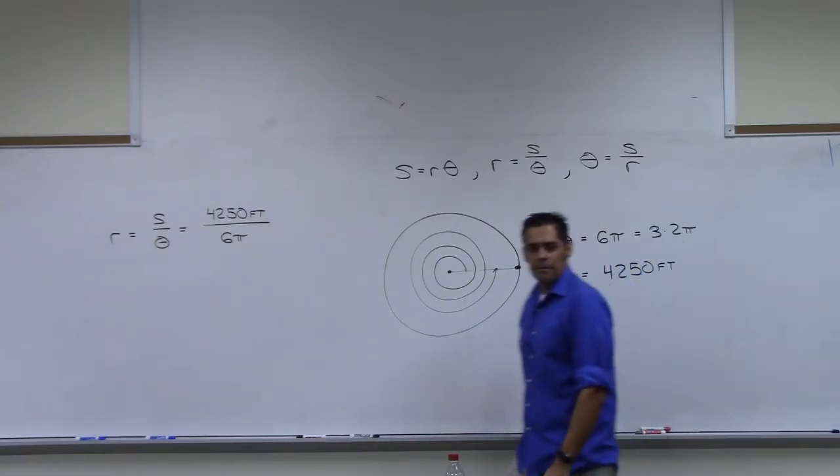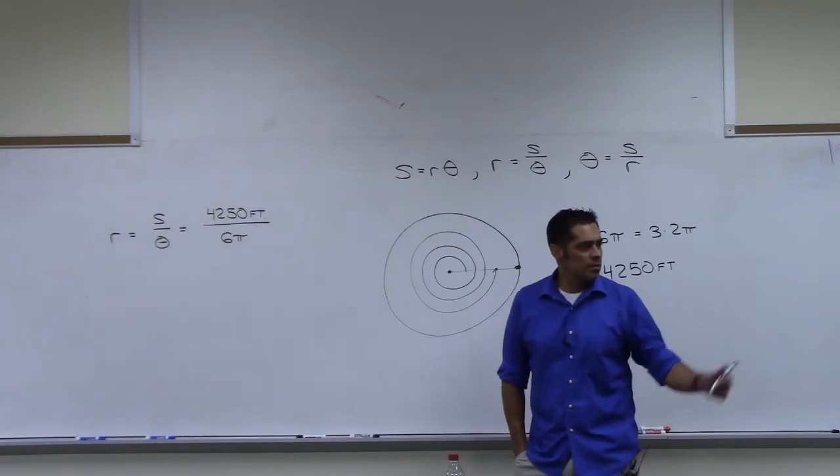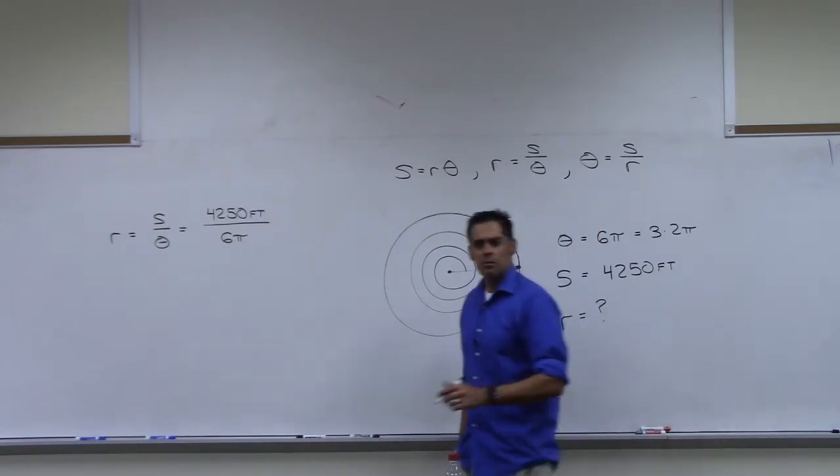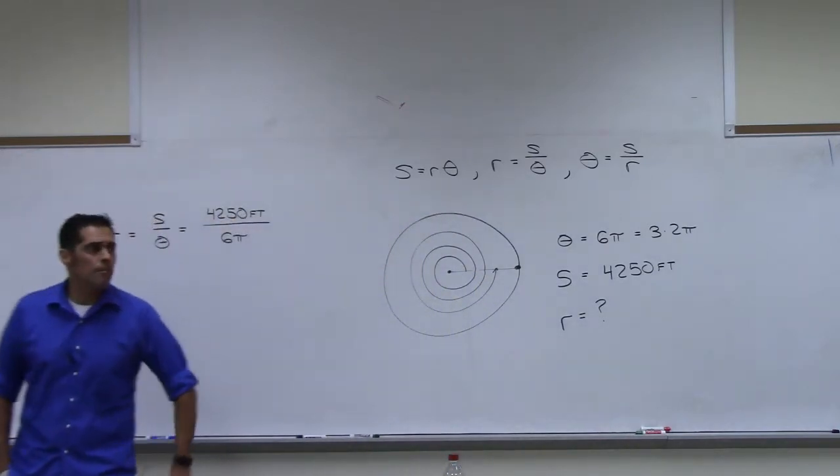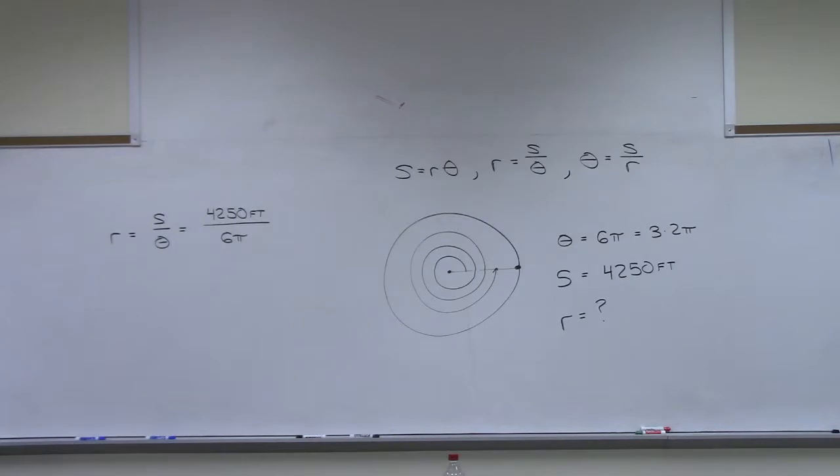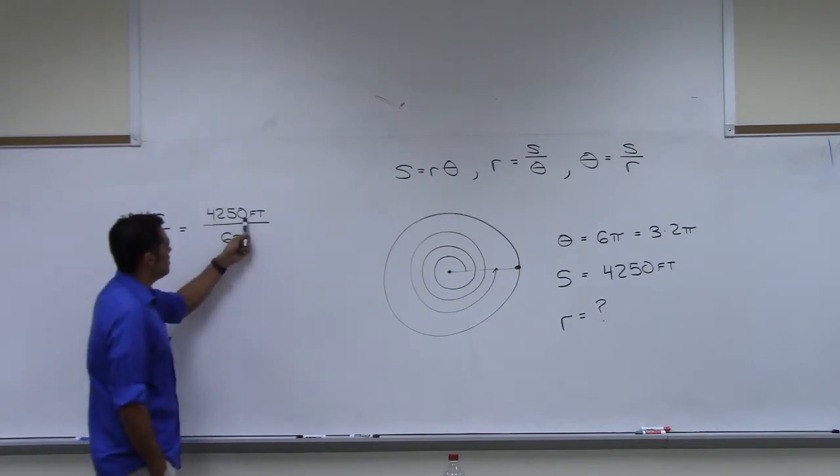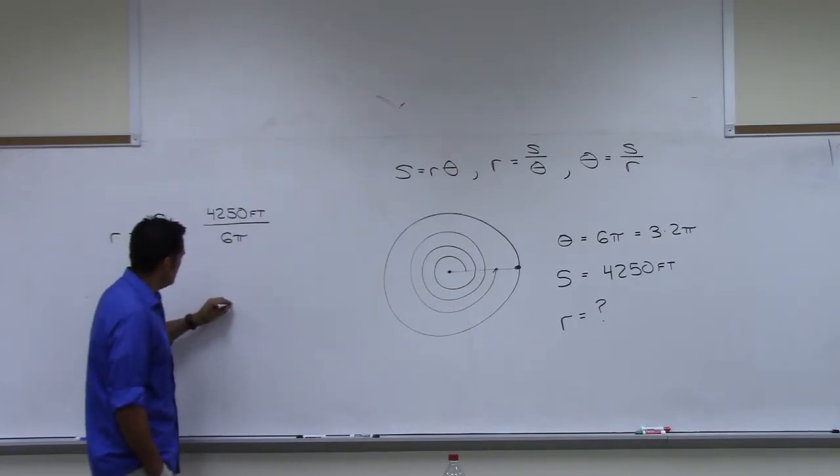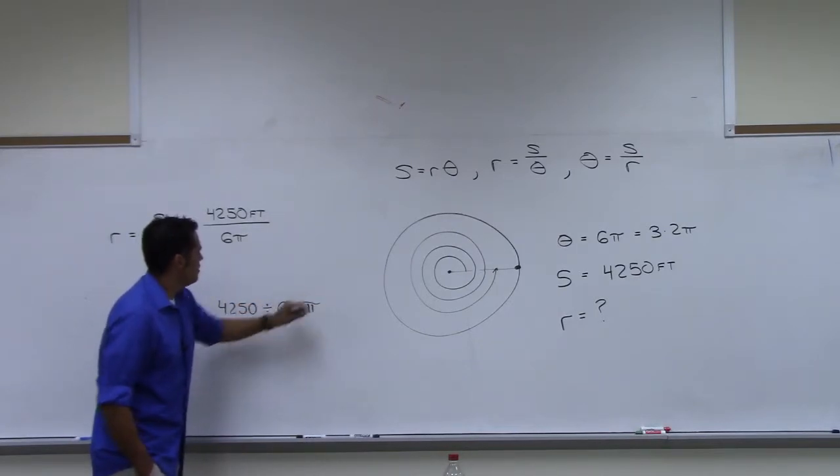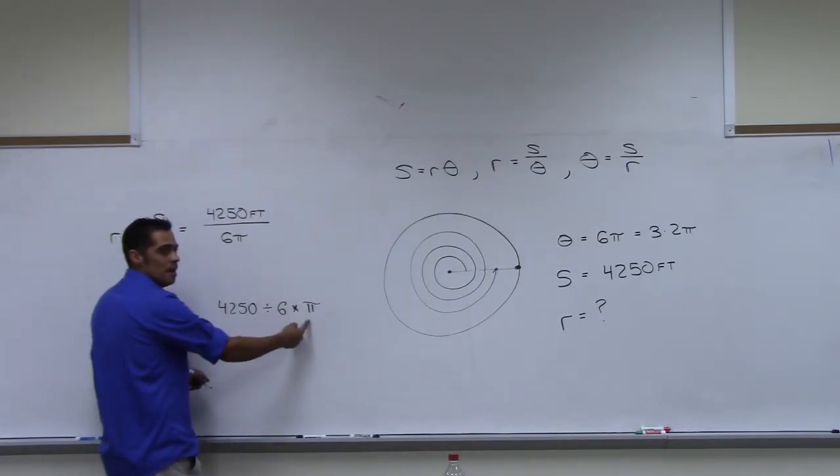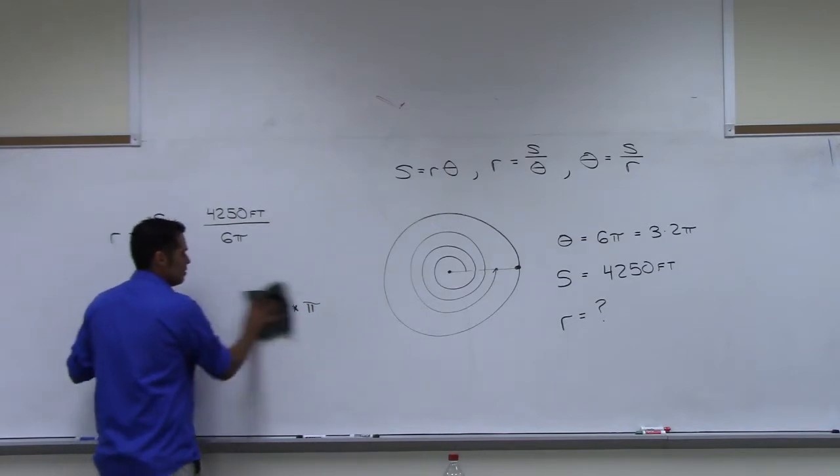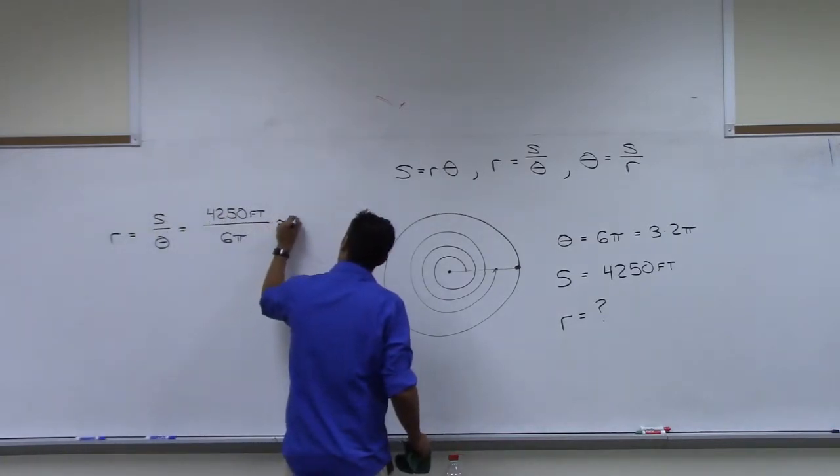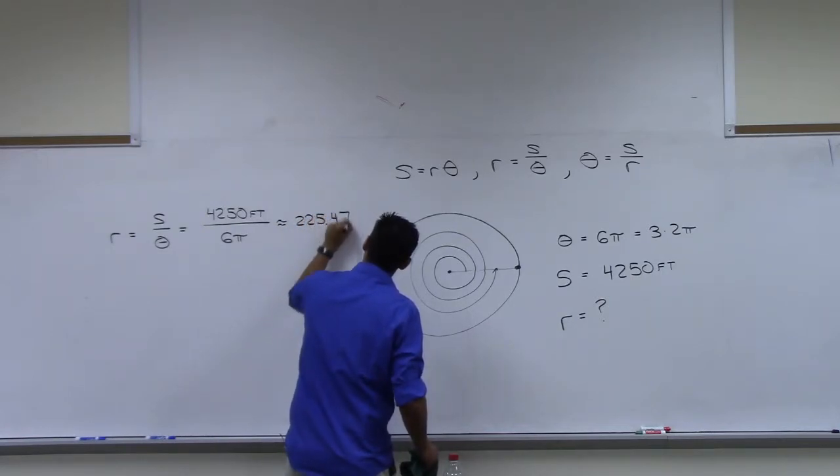You got it? Did you do it? What'd you get? What'd you get? It doesn't seem right. You got 200? Did you say 2,000 or 200? I got 2,000. I think the reason you got 2,000 is because you did this divided by 6 times pi, but you didn't put 6 pi in parentheses. So your calculator thought you did this divided by 6 times pi. So it did this first and then times that. So you got what? 225?